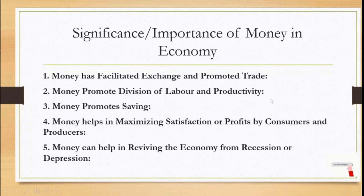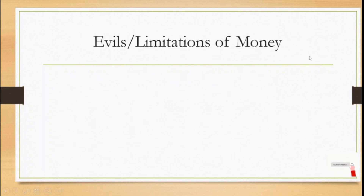So we conclude that money has the most important place in the economy itself. But as we know that each coin has two sides, there are also certain problems and issues which are associated with money. So we will quickly go through one by one what are the problems or limitations of money.